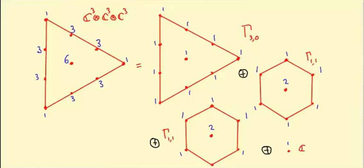We've just decomposed the C3 tensor - C3 tensor C3 tensor C3 - into its irreducible pieces. There was this triangular piece which was gamma 3-0, which actually turns out to be Sim 3 of C3, which sits inside this tensor power. There are two copies of gamma 1-1 and there is one lonely copy of C, just the trivial sub-representation.